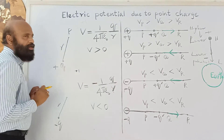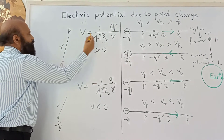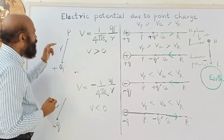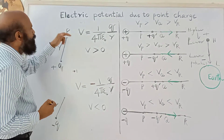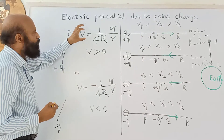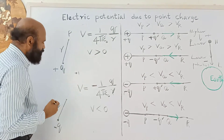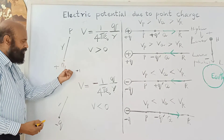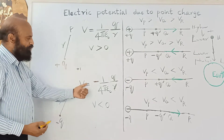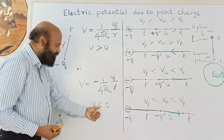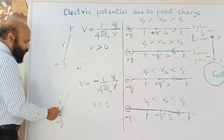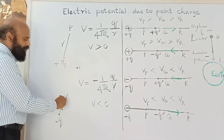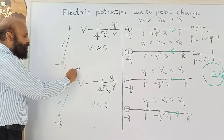Potential is greater than zero for a positive charge. As we move away, r increases and V decreases. At infinity, potential becomes zero. For a negative charge, when you try to bring a positive charge, the negative charge attracts it, so no work needs to be done by us — potential is a negative quantity, less than zero. For a negative charge, nearer points are at lesser potential.